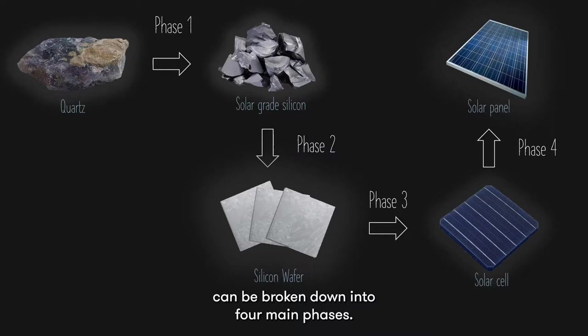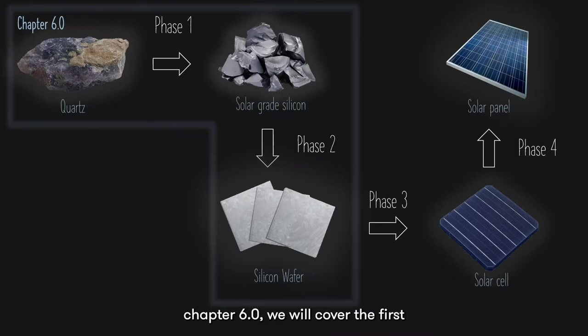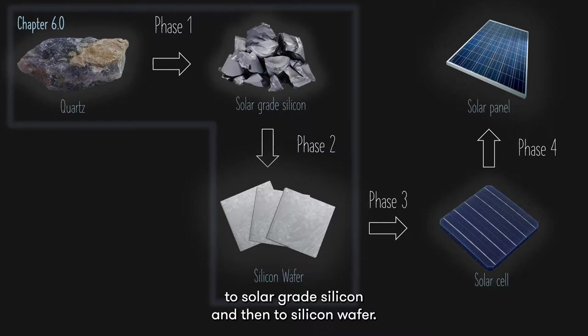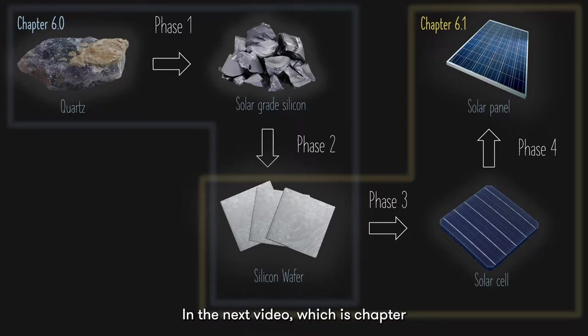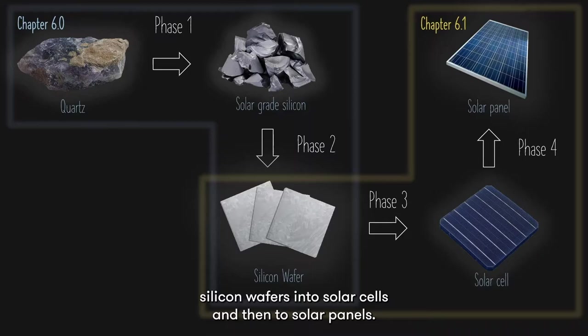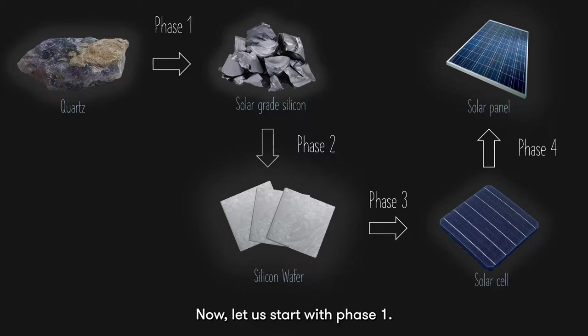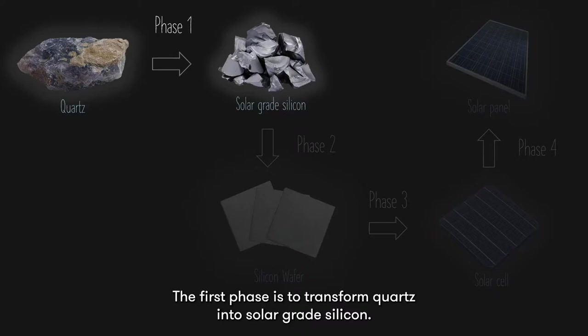The entire manufacturing process of solar panels can be broken down into four main phases. In this video, which is chapter 6.0, we will cover the first and second phases: turning quartz to solar-grade silicon, and then to silicon wafer. In the next video, chapter 6.1, we will learn how to process silicon wafers into solar cells and then to solar panels. Now let us start with phase 1.